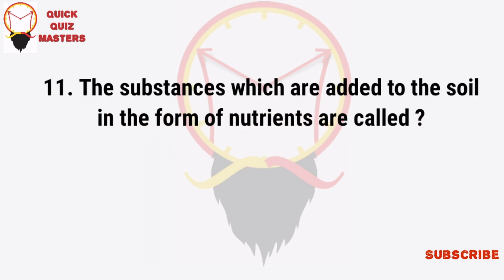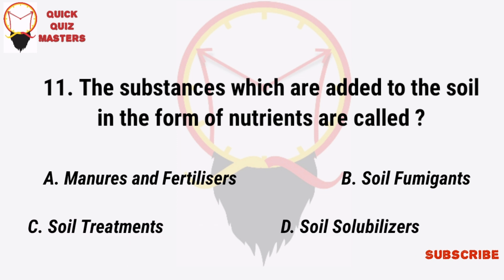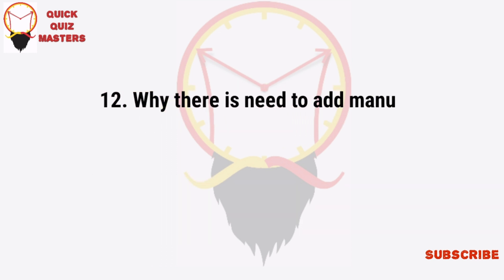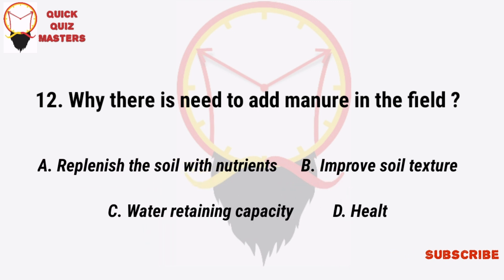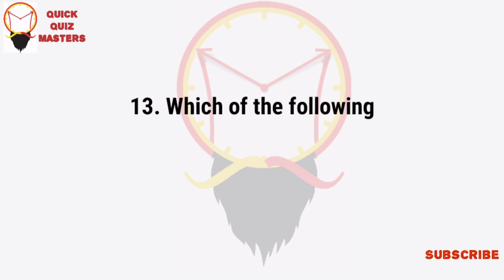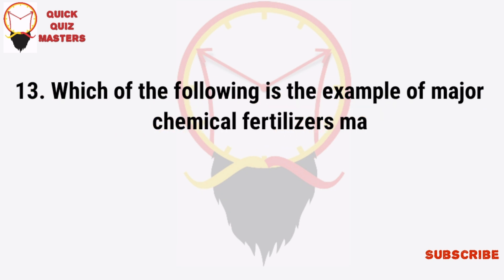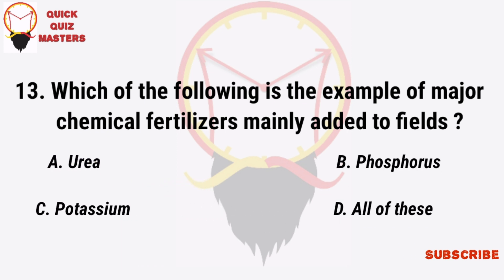The substances which are added to the soil in the form of nutrients are called manure and fertilizers, soil forming and soil treatment, or soil solubilizers. These nutrients improve soil texture, water-holding capacity, and healthy growth of plants — all of these. Examples of major chemical fertilizers mainly added to fields include urea, phosphorus, potassium — all of these.